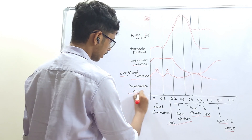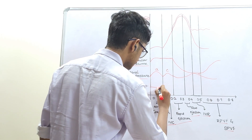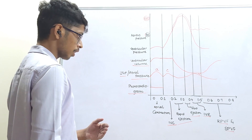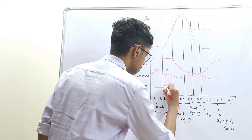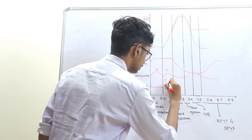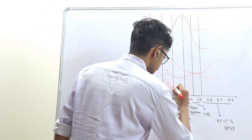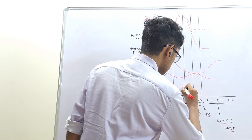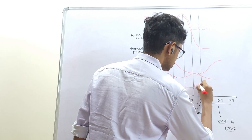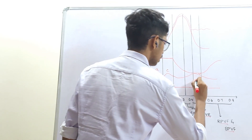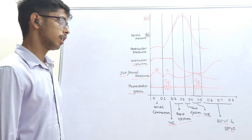Finally, the phonocardiogram — heart sounds on the graph. The first heart sound, S1, is observed after atrial contraction, at the initial stage of ventricular contraction, when ventricular pressure exceeds 5 mmHg and the bicuspid valve closes. S1 is of longer duration and low pitch. The second heart sound, S2, is observed after the slow ejection phase, just before isovolumetric relaxation, due to closure of the aortic valve. S2 is high pitched and of shorter duration. Thank you guys.